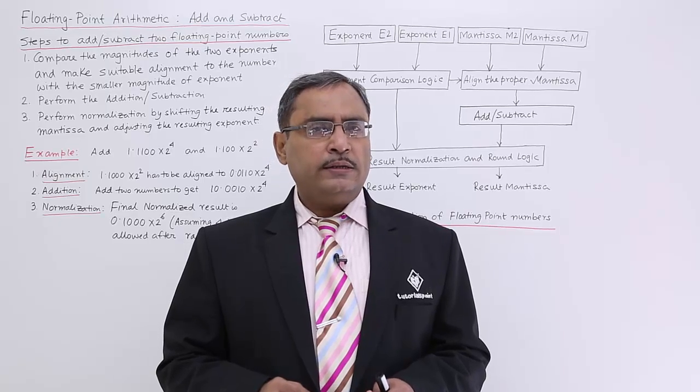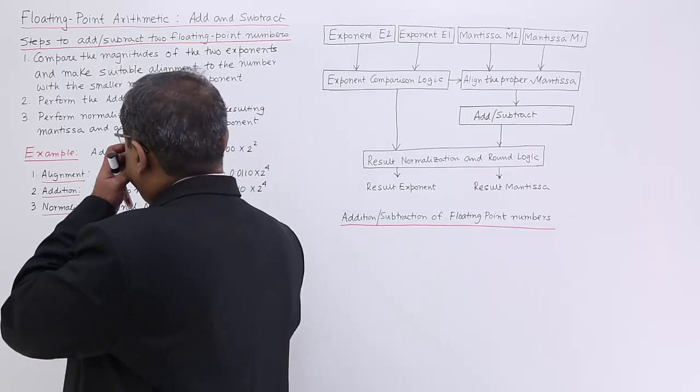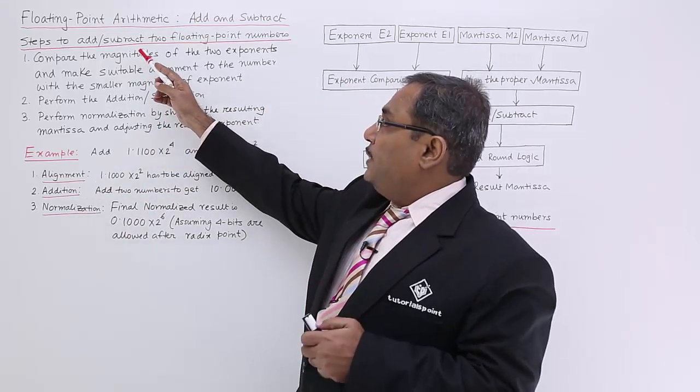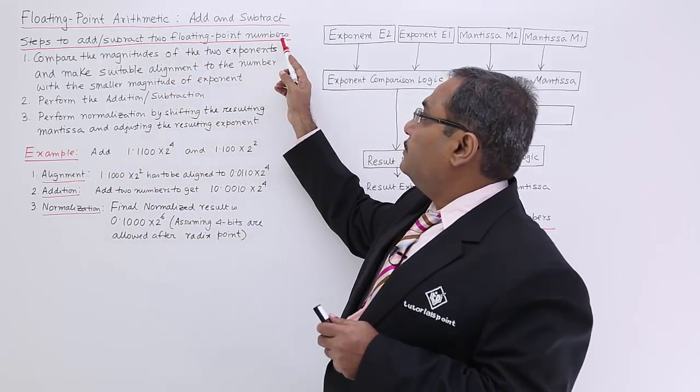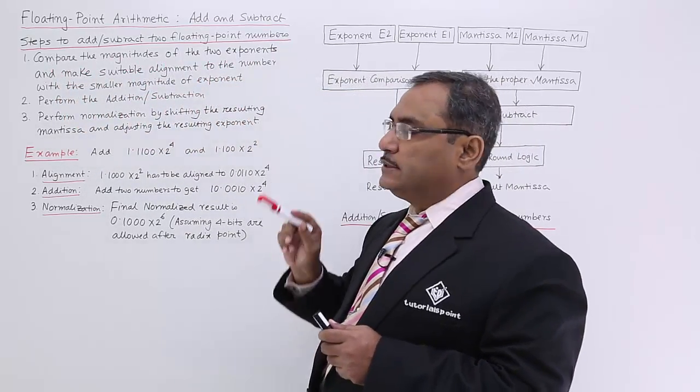Floating point subtraction and addition. Now here you see these are the steps required - steps to add or subtract two floating point numbers. Compare the magnitudes of the two exponents.